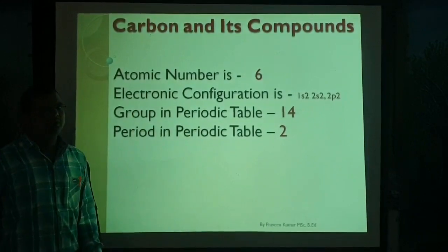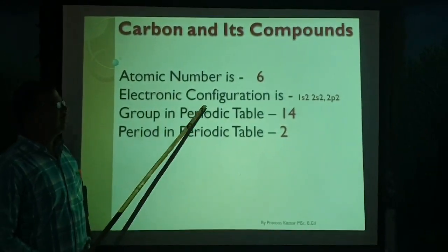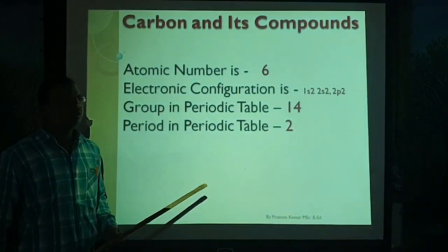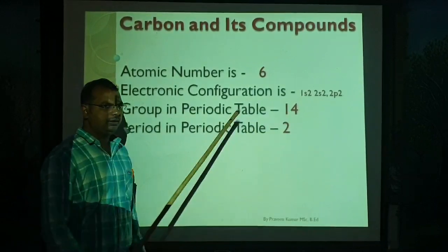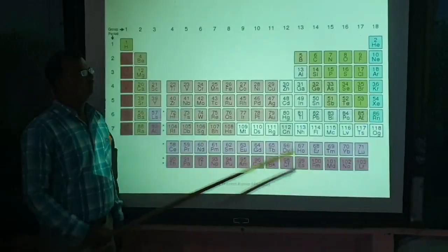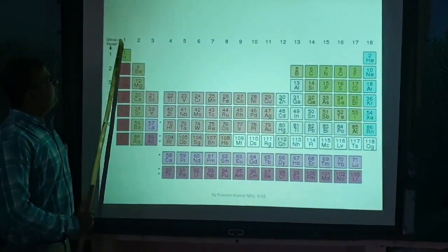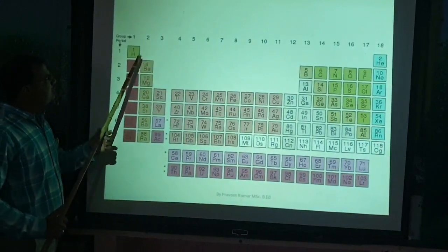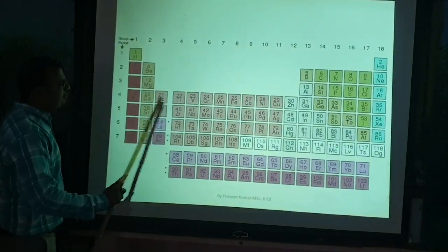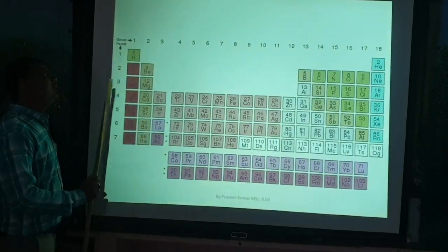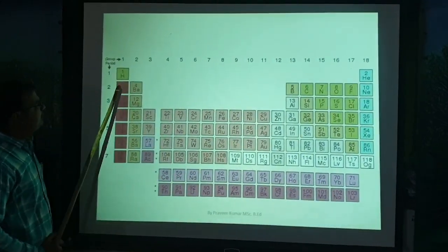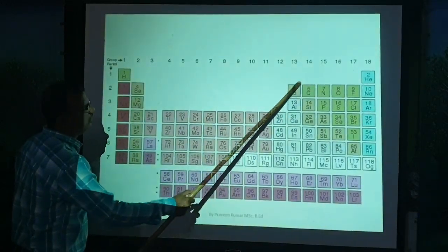The carbon atomic number is 6, and its electronic configuration is 1s², 2s², and 2p². It comes under the 14th group in the periodic table. As you can see here, there are 18 groups — vertical columns are called groups and horizontal rows are called periods. Carbon is here: it comes under the 14th group and period 2, and its atomic number is 6.